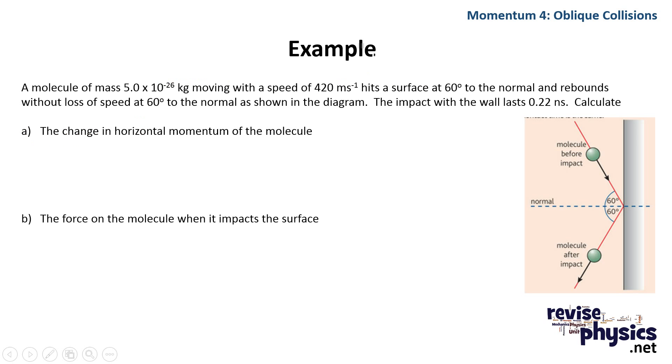So this is a typical question that you might get. We have a molecule impacting with a surface at an angle of 60 degrees to the normal. We're given its mass, we're given its velocity, and we're given the time over which the impact occurs. The first question wants the change in horizontal momentum.